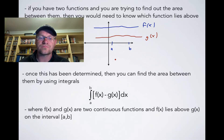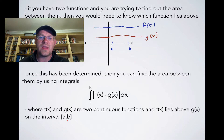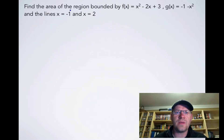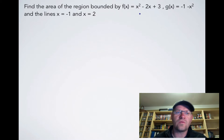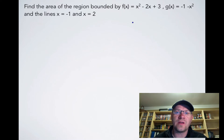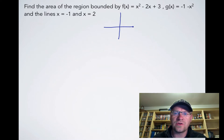Where f of x and g of x are two continuous functions and f of x lies above g of x on the interval a to b. The first example says: find the area of the region bounded by f of x equals x squared minus 2x plus 3, g of x equals negative one minus x squared, and the lines x equals negative one and x equals two.